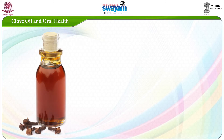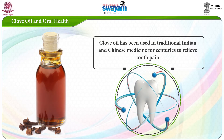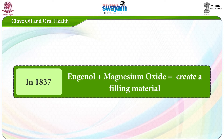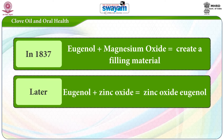Clove oil and oral health: clove oil has been used in traditional Indian and Chinese medicine for centuries to relieve tooth pain. Clove oil contains eugenol. In 1837, eugenol and magnesium oxide were combined to create a filling material. Later, zinc oxide replaced the magnesium oxide to create ZOE — zinc oxide eugenol.